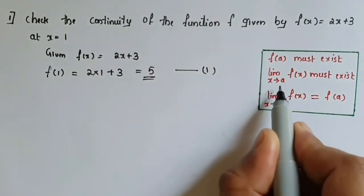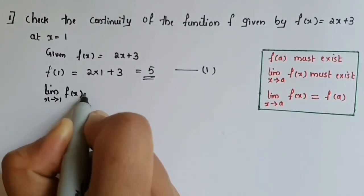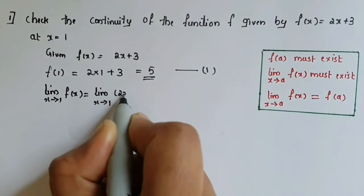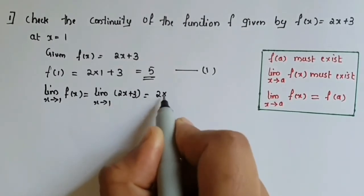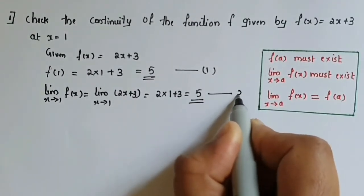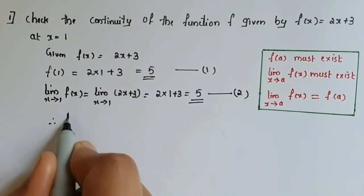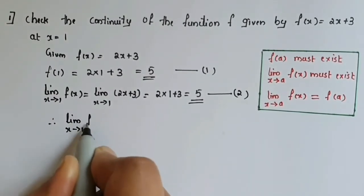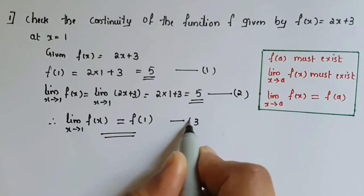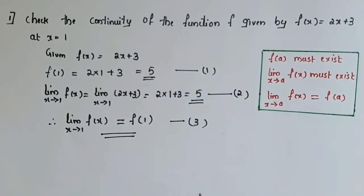Second condition: limit x tends to 1 of f of x equals limit x tends to 1 of 2x plus 3, which equals 2 times 1 plus 3 equal to 5. Conditions 1 and 2 are equal, so we can write limit x tends to 1 of f of x equals f of 1. This is our third condition. Thus, the function satisfies all three conditions and is a continuous function.